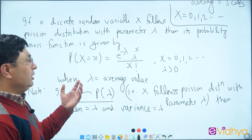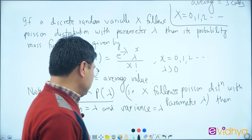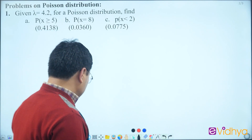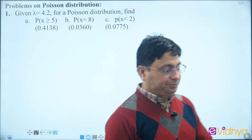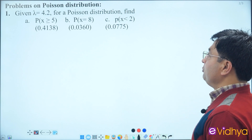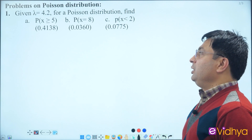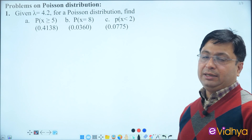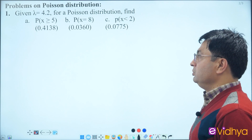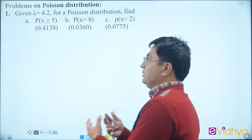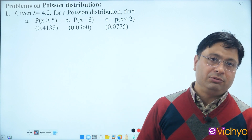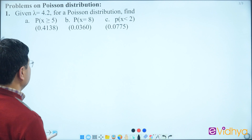Now let's go to the related problems. I have already noted that there will be an indefinite number of cases. Question 1: Given that the lambda value is 4.2 for a Poisson distribution, find: (A) P(X = 5), (B) P(X = 8), and (C) P(X < 2).